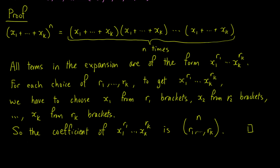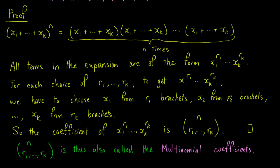Consequently, the number of ordered partitions is also called the multinomial coefficients.